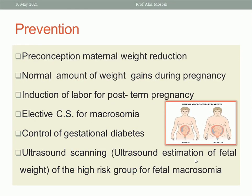How to prevent? Preconception maternal weight reduction is important. We should also advise pregnant ladies about appropriate maternal weight gain during pregnancy. Induction of labor for post-term pregnancies — do not be late for induction in these cases. Elective caesarean section is indicated for a macrosomic baby diagnosed clinically and by ultrasound using expected fetal weight, abdominal circumference, and so on. Elective caesarean section protects against this condition. Control of diabetes, whether before pregnancy or during pregnancy, and early discovery and proper management of gestational diabetes are essential. Ultrasound scanning and regular measurement of expected fetal weight, especially in the high-risk group, are important.